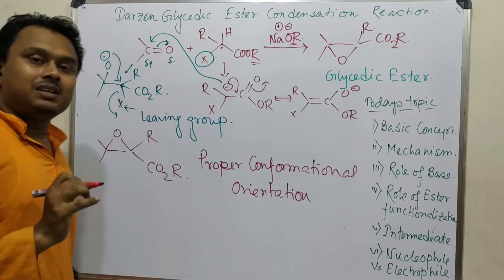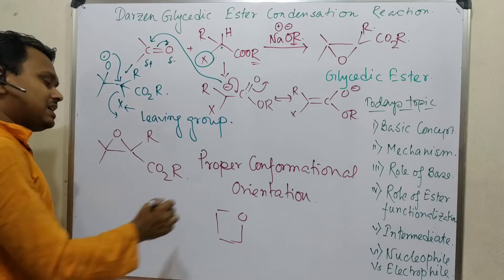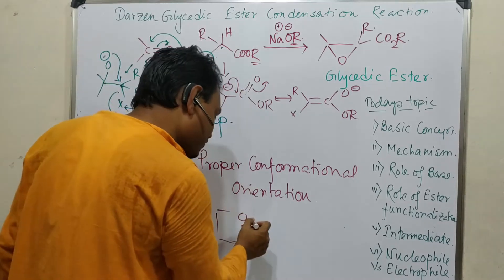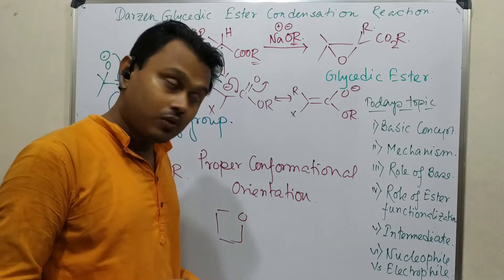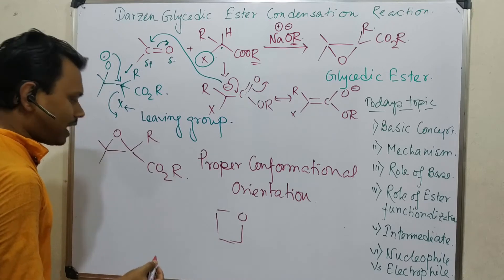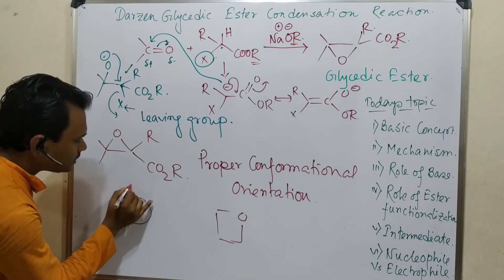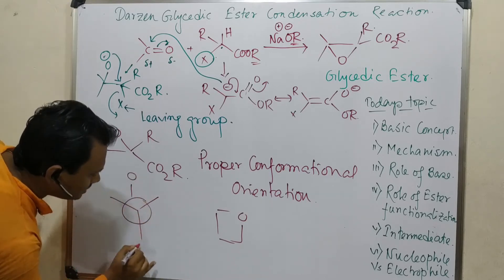This is the reason why, in spite of this being a strained molecule, it is produced. But see, if you consider four-member epoxide, it is very difficult because strain is there but no proper conformational orientation. That's why it's very difficult to prepare such type of four-member epoxide.